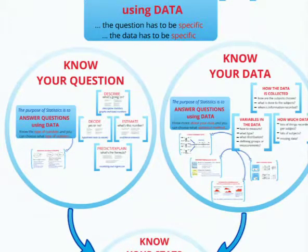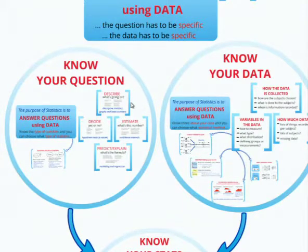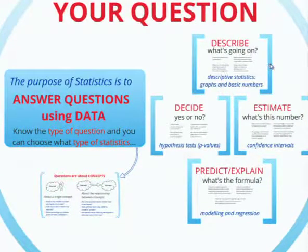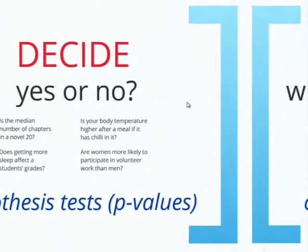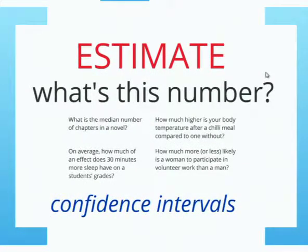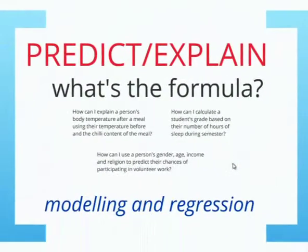So all of this is pretty much what you've been told in StatPrac 1. You've been told about questions whose aim is to decide the answer to a yes or no question — those are what hypothesis tests are for. You've also been told about questions where you're trying to estimate a number, like the sample mean or the slope of a regression line — that's what confidence intervals are for. And questions where you have to predict or explain something and find a formula — that's what regression is for.